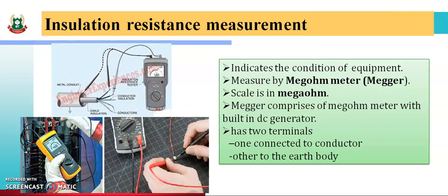The megohm meter comprises a megohm meter with a built-in DC generator. The minimum rating is zero and the maximum rating is infinity. The scale is graduated in megohms.